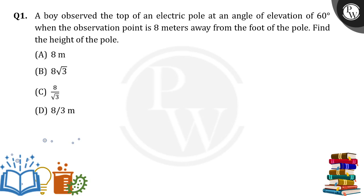So here there is a boy who is observing the top of the electric pole. We know that the electric pole will stand vertically on the ground. Let's suppose this is the vertical pole AB. I am mentioning the pole height with AB, standing vertically on the ground.